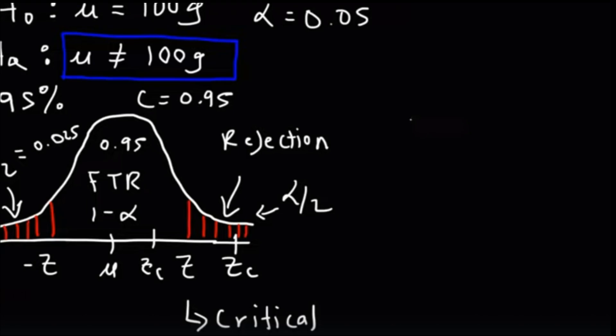If the Z value is greater than the critical value, you should reject the null hypothesis because it is in the rejection region. If the Z value is not in the critical region, you should not reject the null hypothesis.